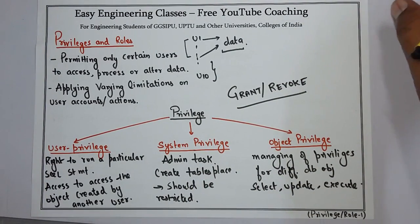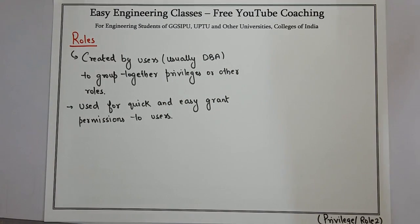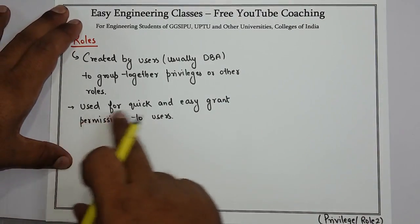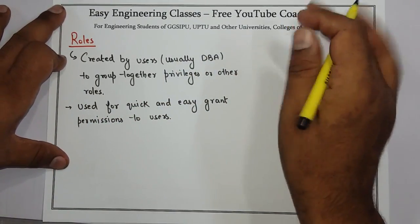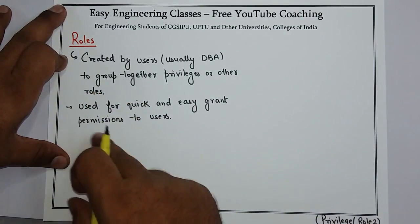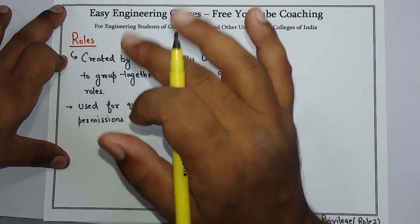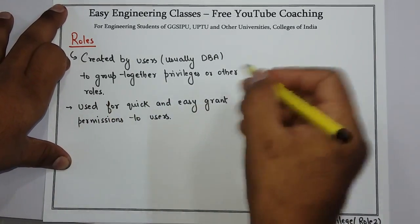That is all about privileges. Now we will see a brief introduction about roles. Roles are created by users, usually the DBA or a user with system privilege, to group together privileges or other roles. It is essentially a larger entity that contains privileges or other roles together, used for quick and easy granting of permissions to another user. For example, if I want to give all the privileges that come under the connect feature of the database, I can create a role called connect and grant that to the user.